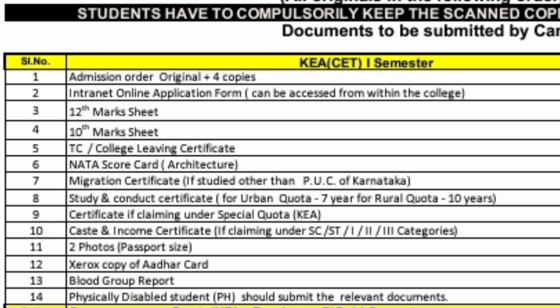All students who are joining through KEA or CET admission process in the first semester are required to bring the KEA admission order — which is KCET admission order or DCET admission order, depending on which mode you are coming through KEA. So original plus 4 copies of the admission order. Then there is an intranet online application form which is an internal form — you don't need to bother about this now, as they will provide it separately when you go for reporting.